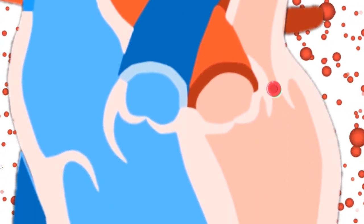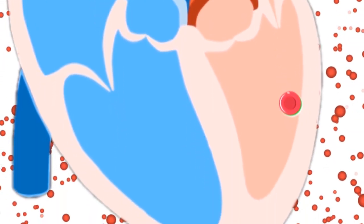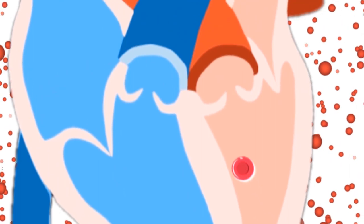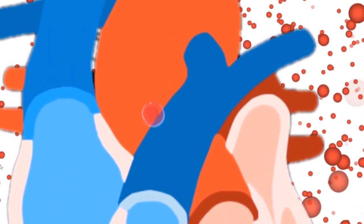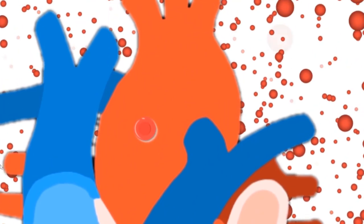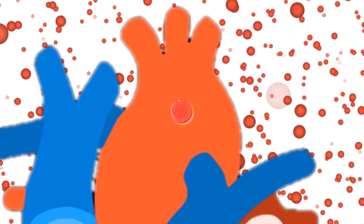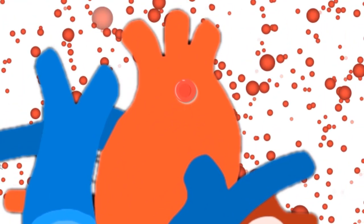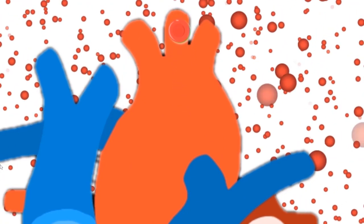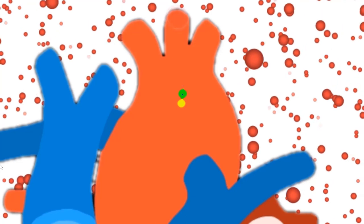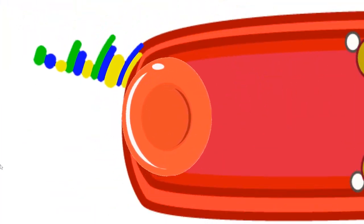This oxygen-rich blood will be received by the left atrium going to the left ventricle, pumped into the aorta in order for it to be distributed in other parts of the body that need oxygen. So this blood will now distribute its oxygen and collect carbon dioxide to every cell of the body.